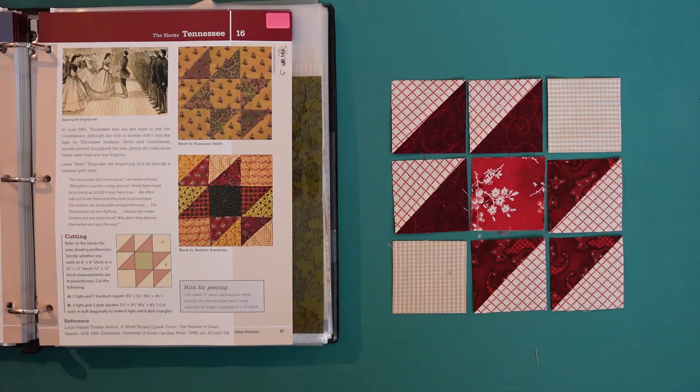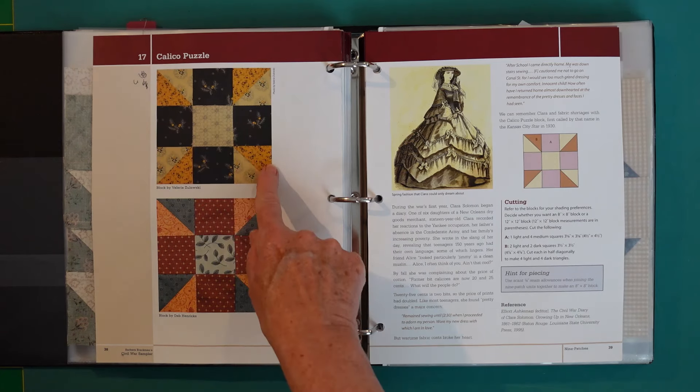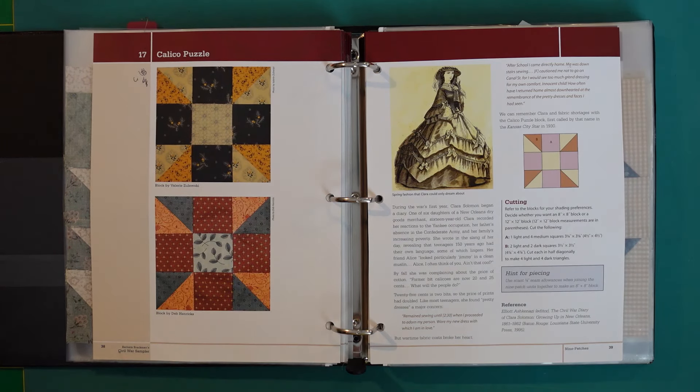Next up is block 17. Block number 17 which is called Calico Puzzle follows along with the same theme. You can see that it's a simple nine patch block and if you follow Barbara's instructions you'll be working with 1⅞ inch or ⅞ inch cuts. But if you simply reduce it to a 6 inch finished block and add a border you can reduce those cuts to a 2½ inch square or a 2½ inch half square triangle and assemble it as a nine patch.